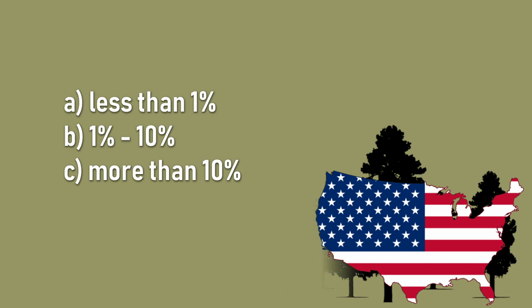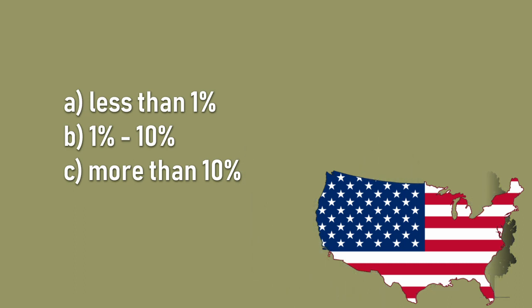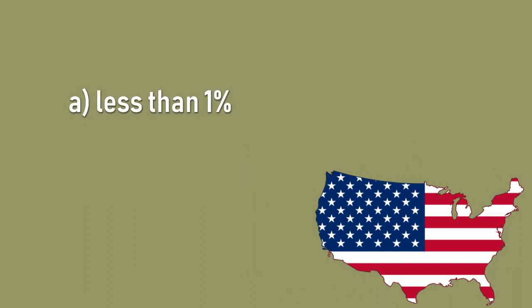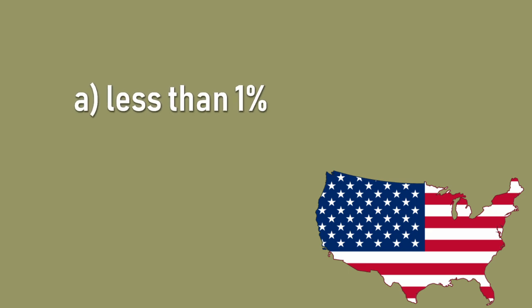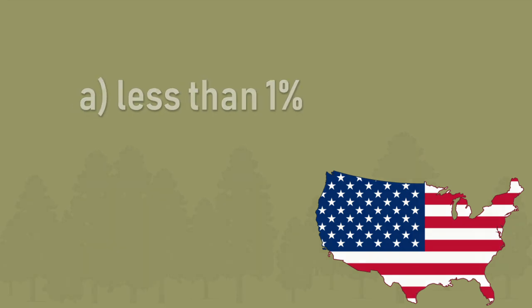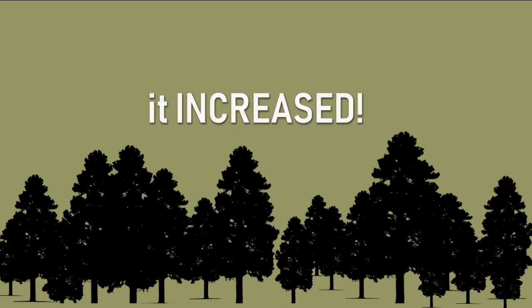Go out on a limb and take a guess. The answer is A — less than 1%. This was kind of a trick question, because the total forest area in the United States didn't decline at all. It increased.